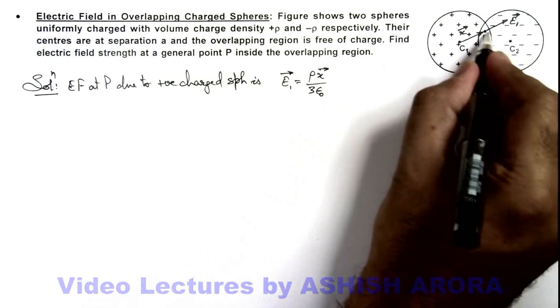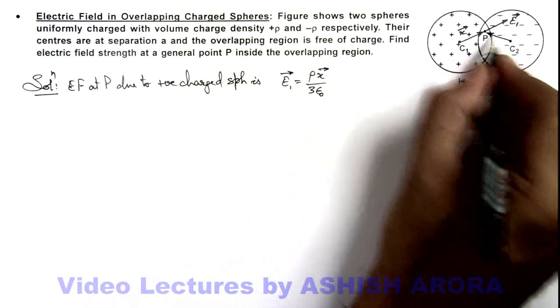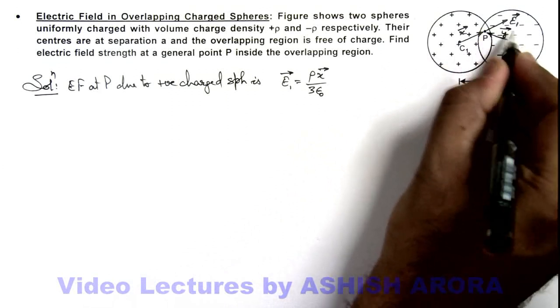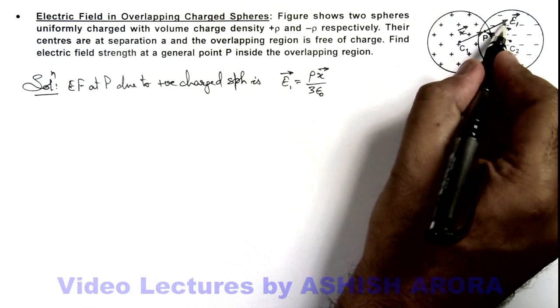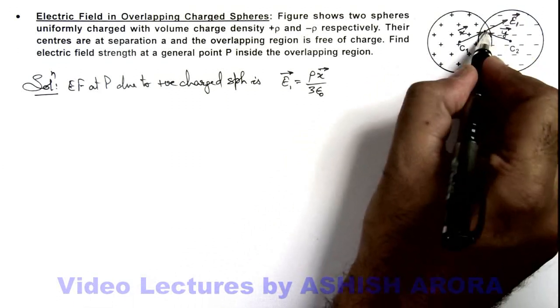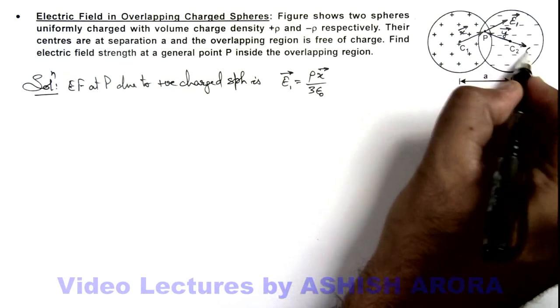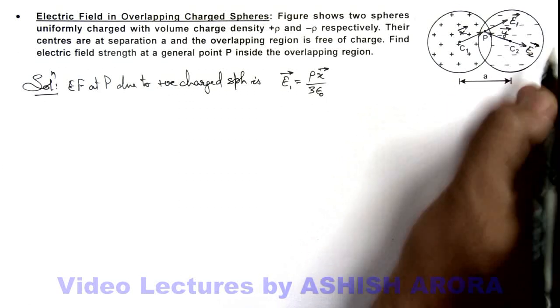Similarly if this point P is located at a position y vector with respect to the center of another sphere, so here electric field due to the negative charge will be in this direction which is E₂ vector.